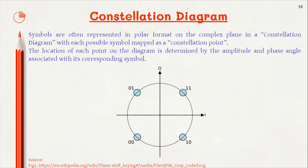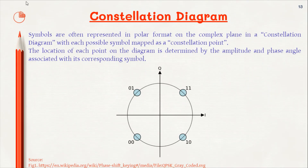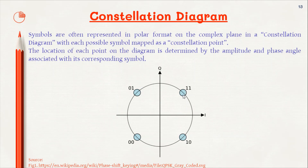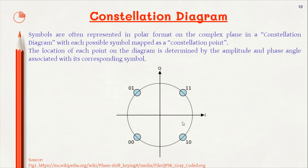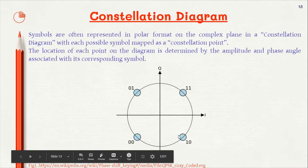After completing the modulation and demodulation section, we will now move on to the constellation diagram. Symbols are often represented in polar format on the complex plane, which is known as the constellation diagram. Each possible symbol is mapped as a constellation point. The location of each point on the diagram is determined by the amplitude and the phase associated with the corresponding symbol. Due to noise in the channel, we can have variation in amplitudes as well as phase angles for different symbols, so all corresponding symbols will lie somewhere around their ideal point. As long as the two constellations do not overlap, we can retrieve the bits back successfully.